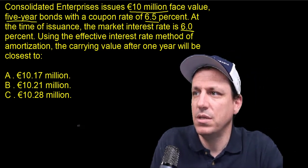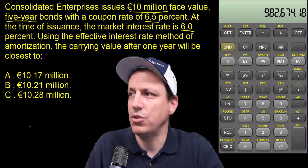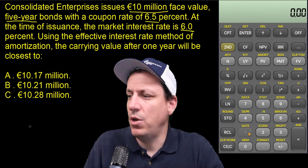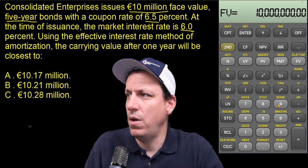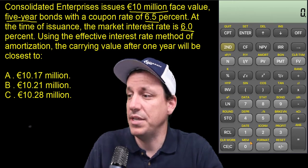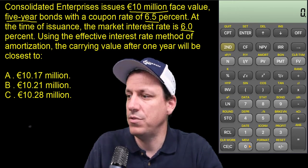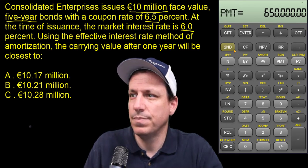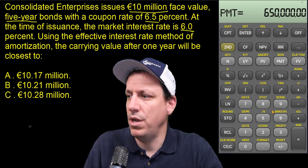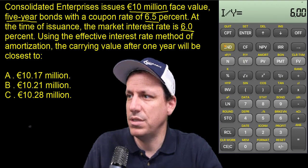Let's use our calculator. We have $10 million in bonds as the future value. The coupon rate is 6.5%, so 0.065 times 10 million — that's our payment on the bonds. The interest rate per year is 6%, that's the market rate — I/Y equals 6.